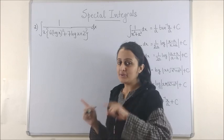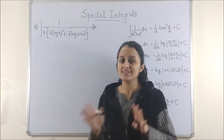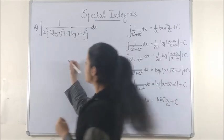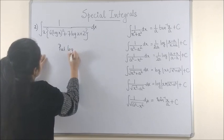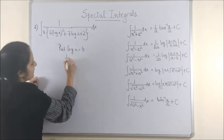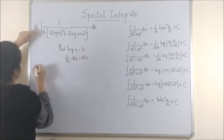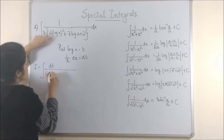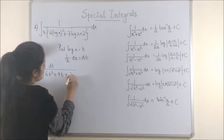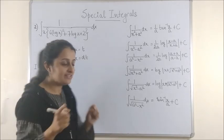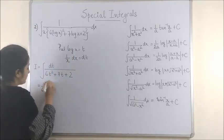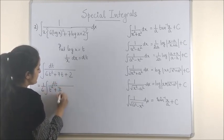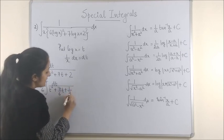For the second question, the moment you put log x as t, it will take the form we just used. So put log x as t — the derivative gives us 1 by x dx as dt. The integral transforms to dt upon 6t squared plus 7t plus 2. Once more, in order to complete the square, take 6 common, and you are left with t squared plus 7 by 6 t plus 1 by 3.